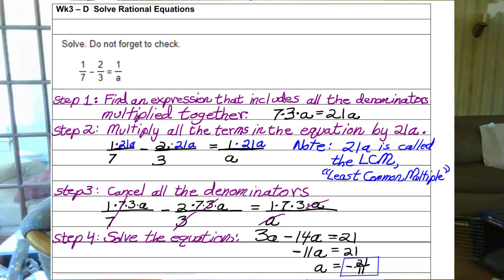Now there's a reason I'm doing that, and that's so that I can cancel out the denominators. Here the 7s cancel out each other. Here the 3s cancel out each other. And here the a's cancel out each other. Leaving me with 1 times 3 times a, 3a minus 2 times 7 times a, that's minus 14a, equals 1 times 7 times 3, which is 21. Then you just solve the equation. And here's your answer. Your solution. It's that easy.